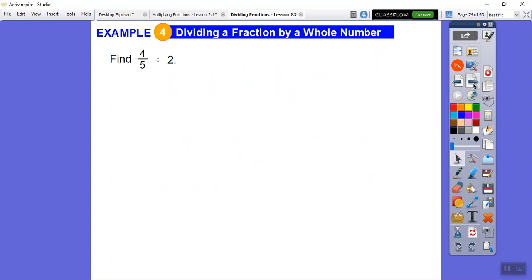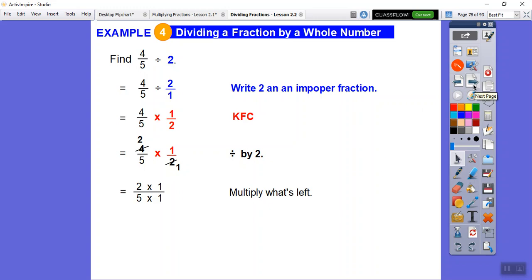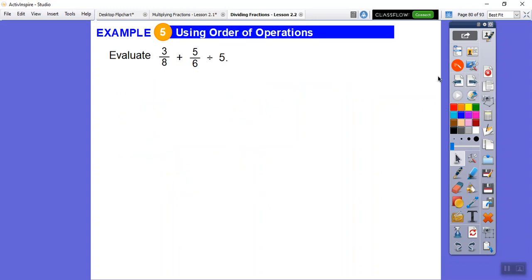All right, how about this? Well, first thing we've got to do is change this to a fraction, make it two over one. So there that is. And then we'll keep flip change. KFC. So we flip the second guy and change it to a multiplication and kept the first fraction. I think I'm going to go ahead and cross-cancel. Two divided by two is one, two goes into four twice. So we divided these guys by two. Then we're left with two times one over five times one. Two times one is two, five times one is five. So the final answer is two-fifths.